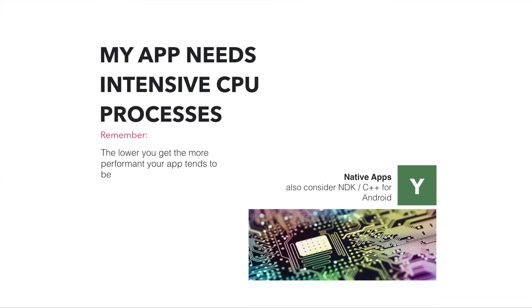Let's discuss what questions and points you should consider to decide which tier to go for. The first point: does your app need intensive CPU processes? If so, you might prefer the native apps tier — the lower you get, the more performant your app tends to be. Also, if you think your app needs very intensive processing, have a look at the NDK. You might prefer writing part of your code in C++ to deal with lower-level issues.